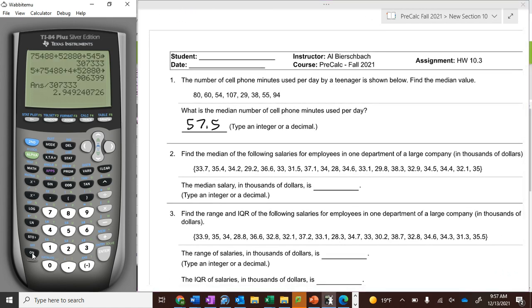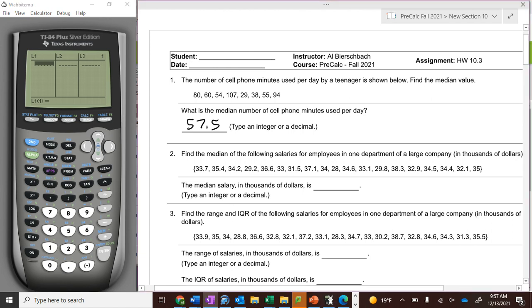On your graphing calculator you go to list. Today we'll be working with the list, or stat. So you go stat, edit. If you have a bunch of numbers in there, you go up, clear, down, up, clear, down.